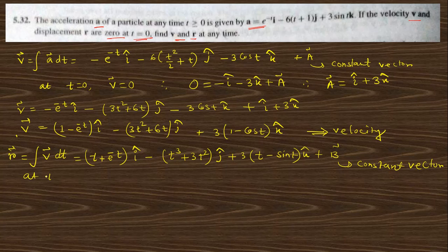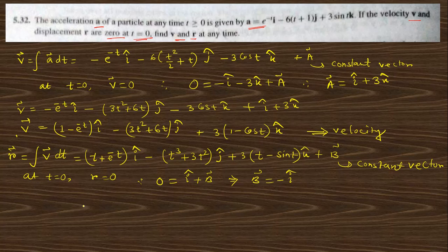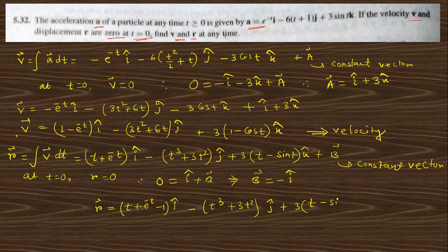If you put the initial condition at t equals 0, r is 0. So 0 equals: at t = 0, e to the 0 is 1, so there is i-cap; the other terms are 0; so the constant vector v is minus i-cap. Therefore r vector equals (t + e^(−t) − 1) i-cap, minus (t³ + 3t²) j-cap, plus (3t − sin t) k-cap. This is the position vector, and this is the solution of question 5.32.